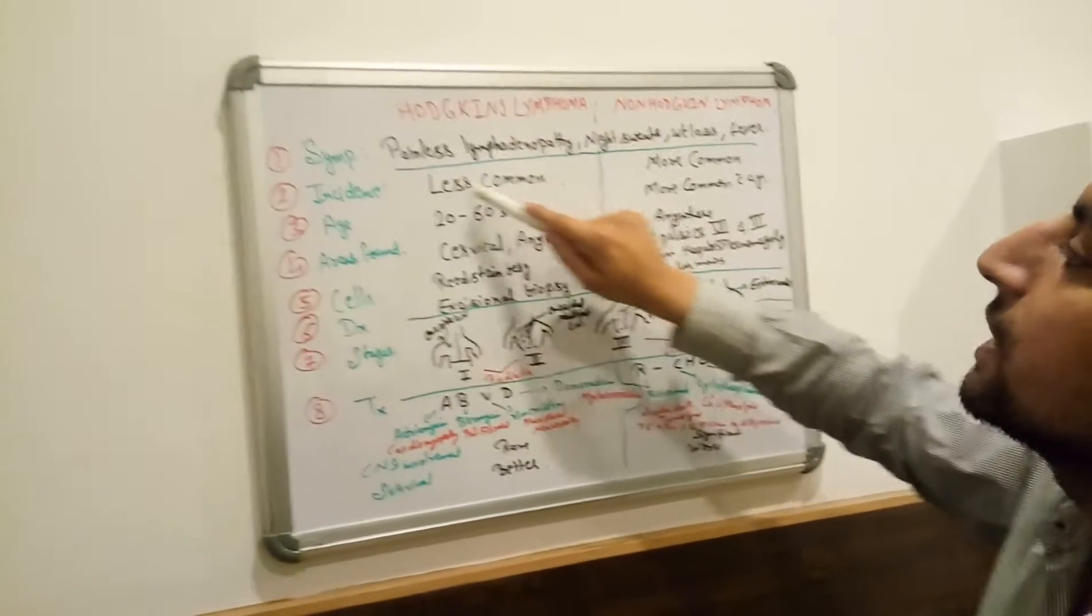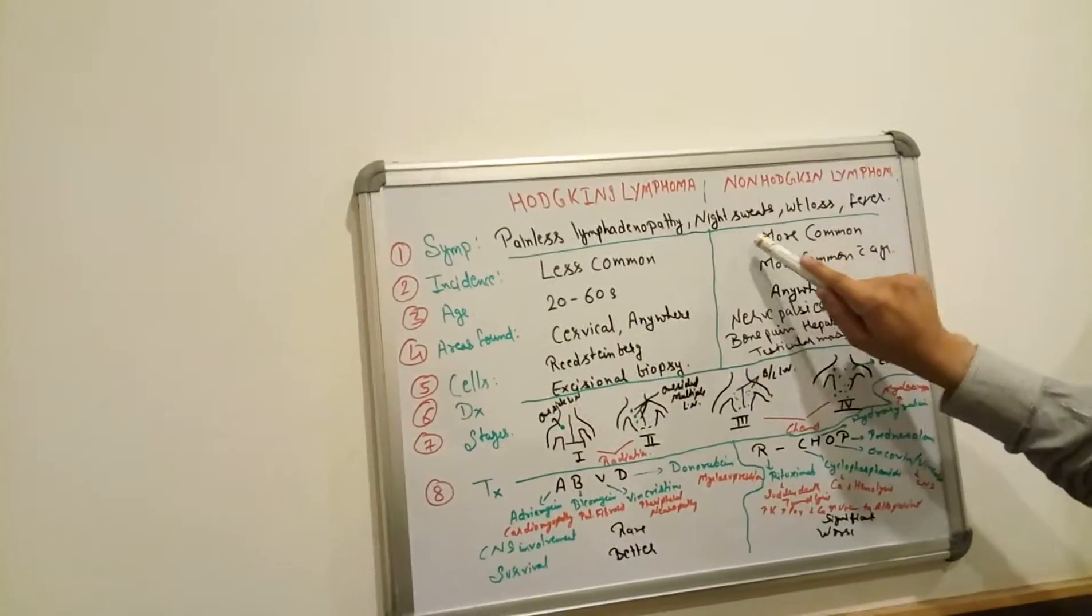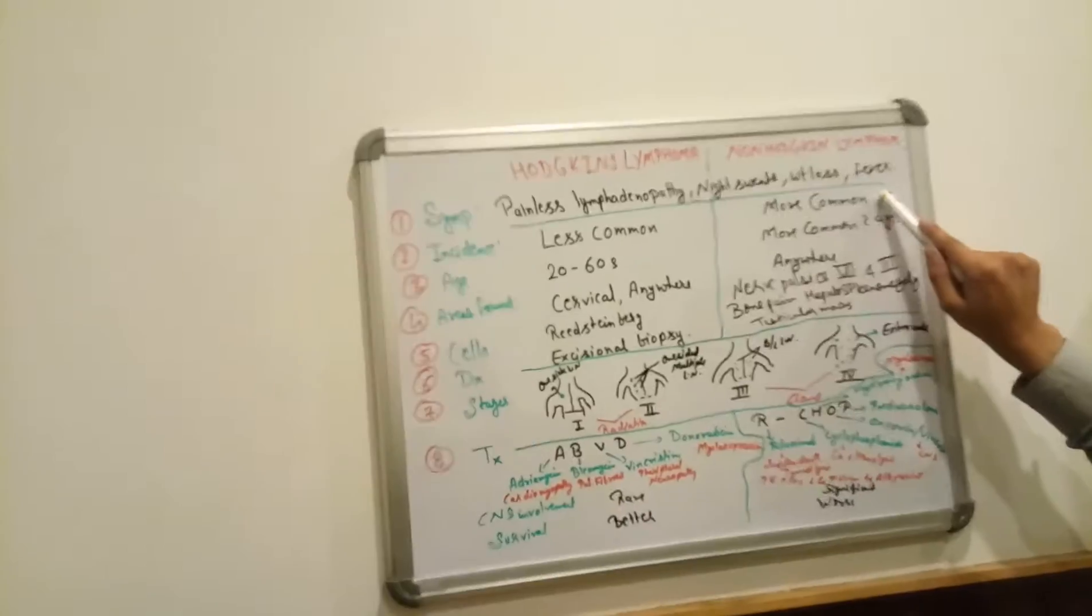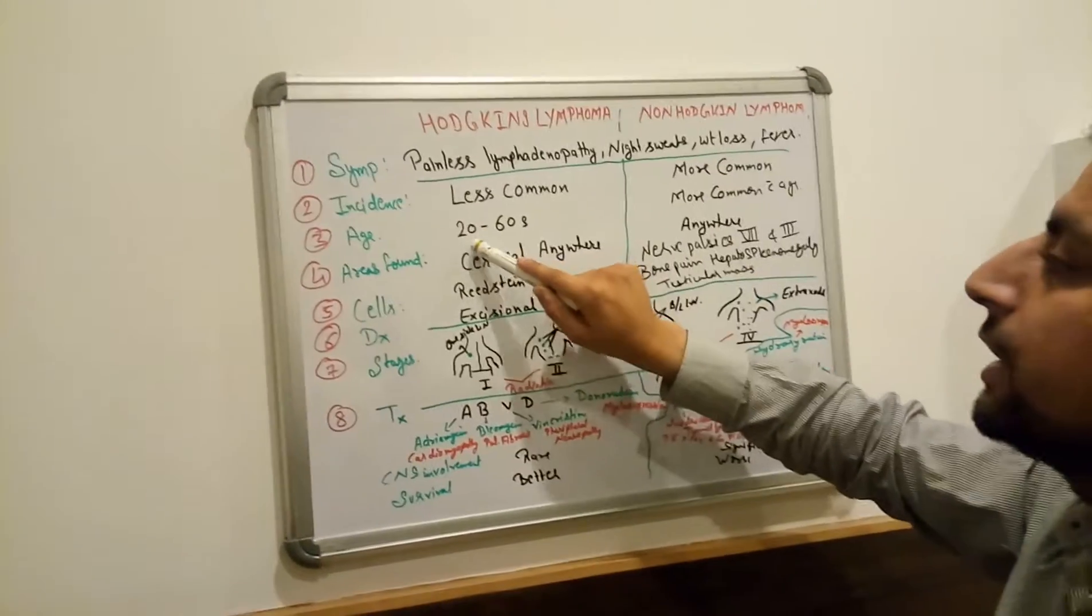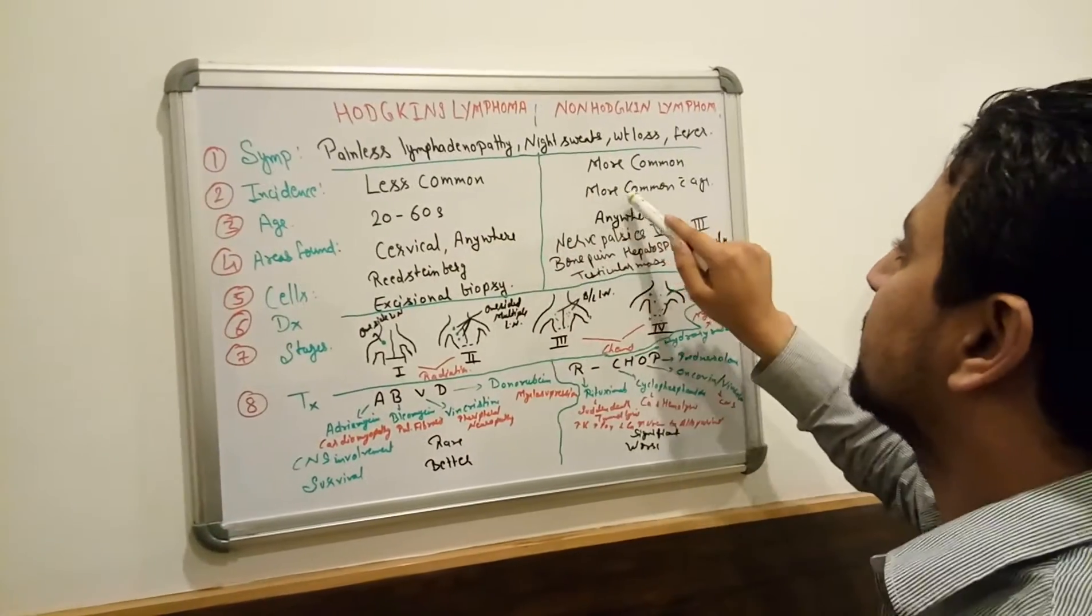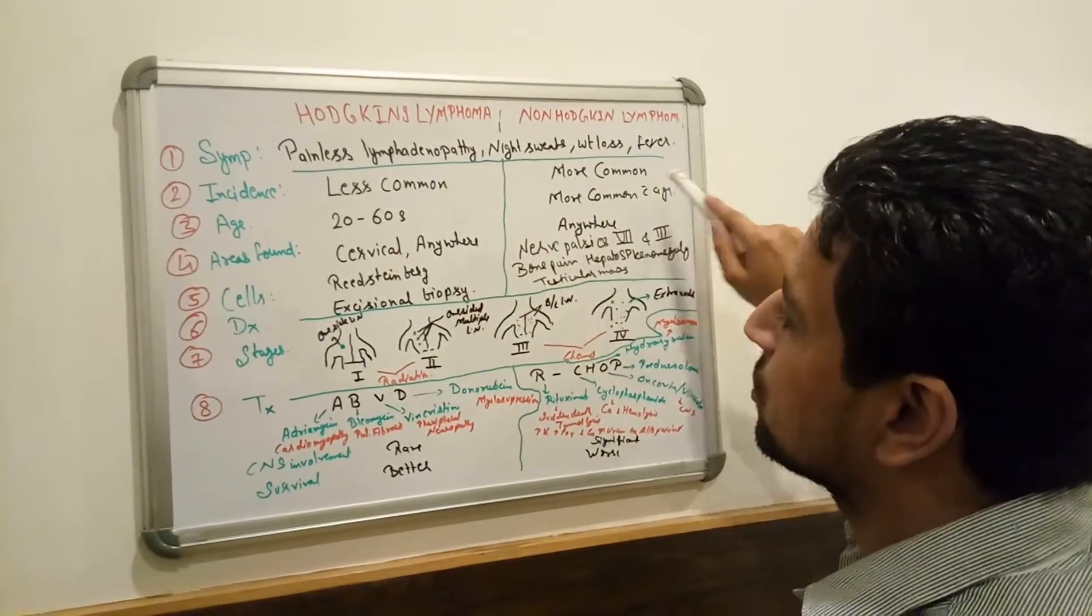Incidence - Hodgkin lymphoma is less common whereas non-Hodgkin lymphoma is more common. Age is 20 to 60s but it is more common with age onset.